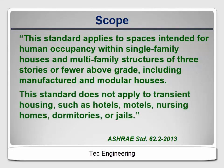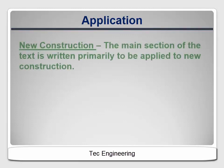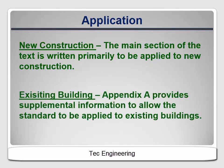This standard does not apply to transient housing such as hotels, motels, nursing homes, dormitories, or jails. ASHRAE Standard 62.2 was written primarily to apply to new construction. It assumes that all the specifications can be implemented with relative ease by the builder during construction. But in existing buildings it may not be so easy — for example, to add a range hood to the kitchen. There may be structural or budgetary hurdles, so an appendix is included that provides guidance on applying the standard to existing buildings.